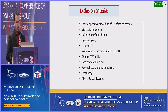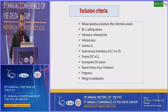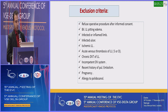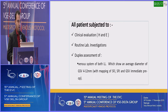Exclusion criteria: refusal of operative procedure after informed consent, bilateral lower limb edema, infected or inflamed limb, infected ulcer, ischemic lower limb, acute venous thrombosis or DVT, incompetent deep venous system, recent history of pulmonary embolism, pregnancy, and allergy to polidocanol.